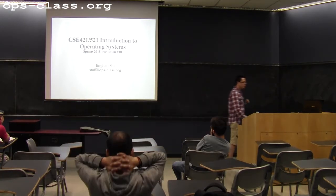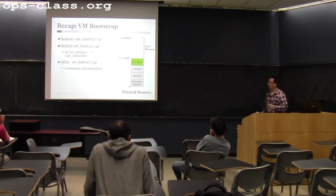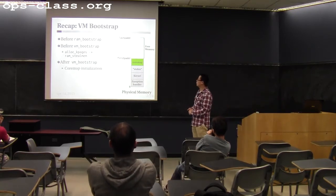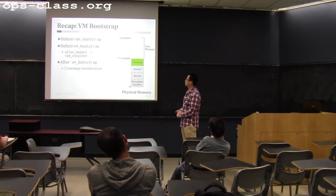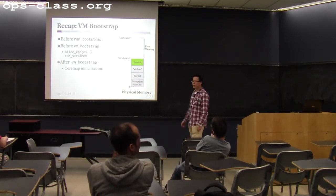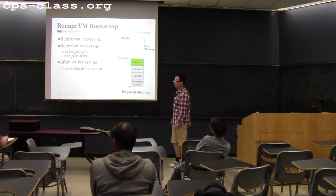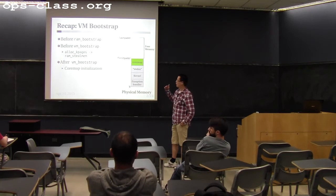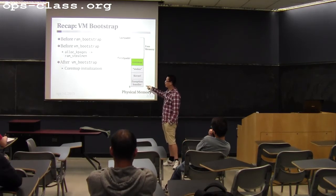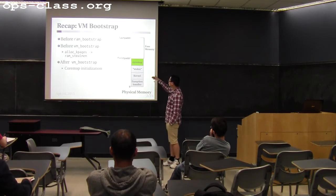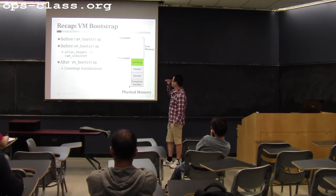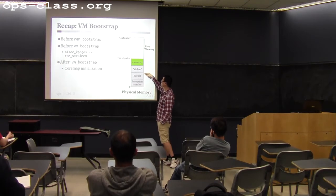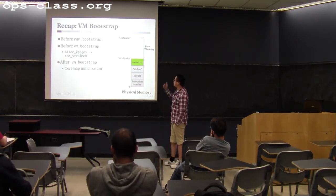Let's get started. Before we talk about today's content, let's do a quick recap of what we talked about last time. We basically went over the virtual memory bootstrap process. Here is what the physical memory looks like at different stages. At the very beginning, before the kernel gets running, the exception handler is loaded into memory, occupying some physical memory, and then the kernel is loaded right after that.